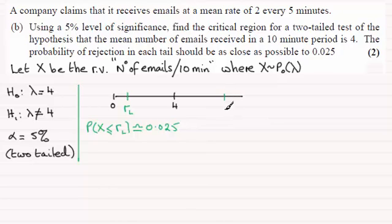And if I take this value here as the upper critical value, RU, then we're looking for the region where the probability of X being greater than or equal to that upper critical value is approximately 0.025, two and a half percent. So I'm going to work through both of these individually then.